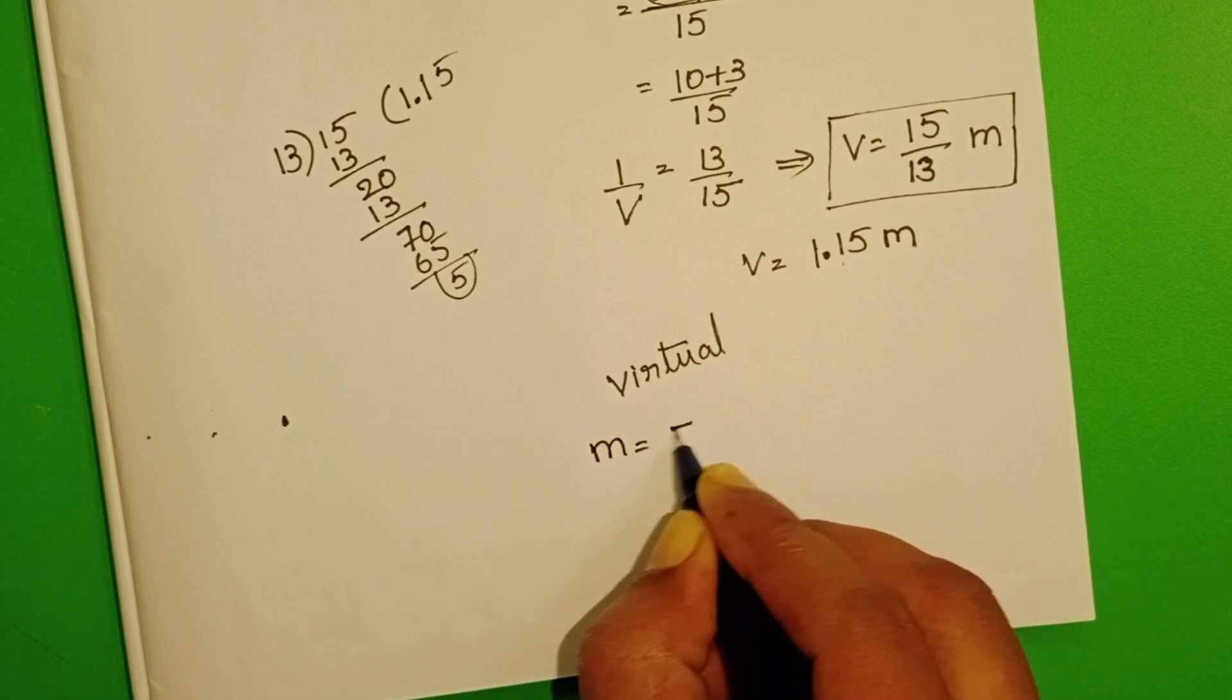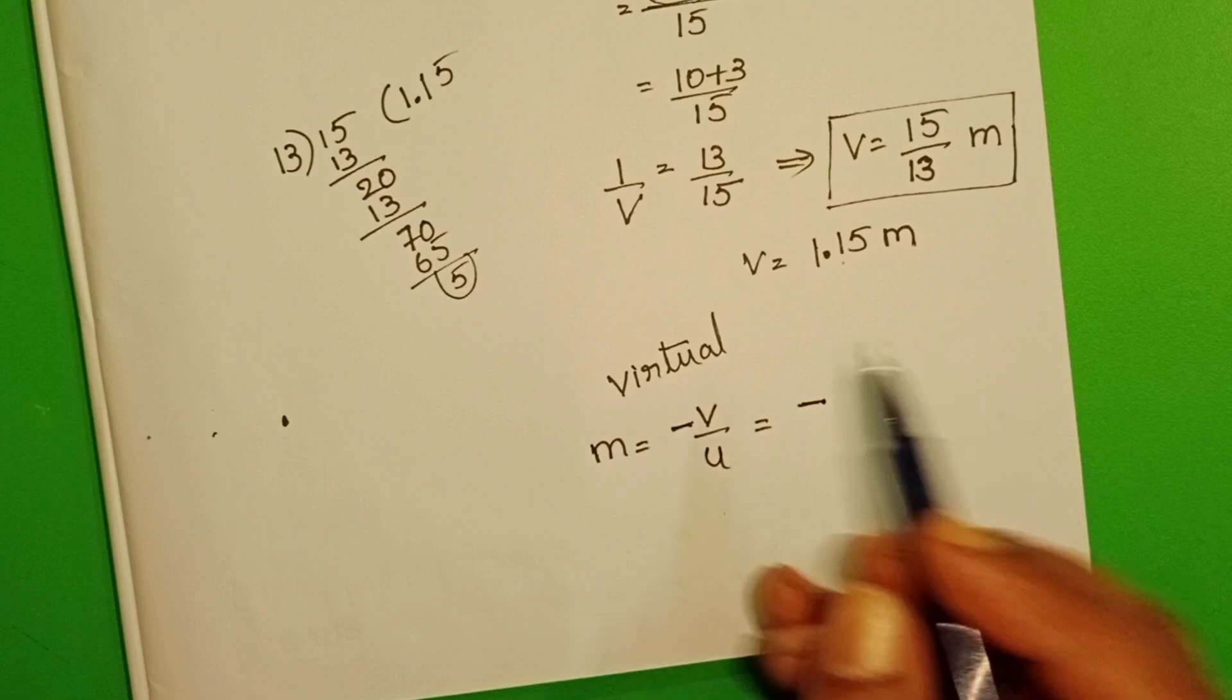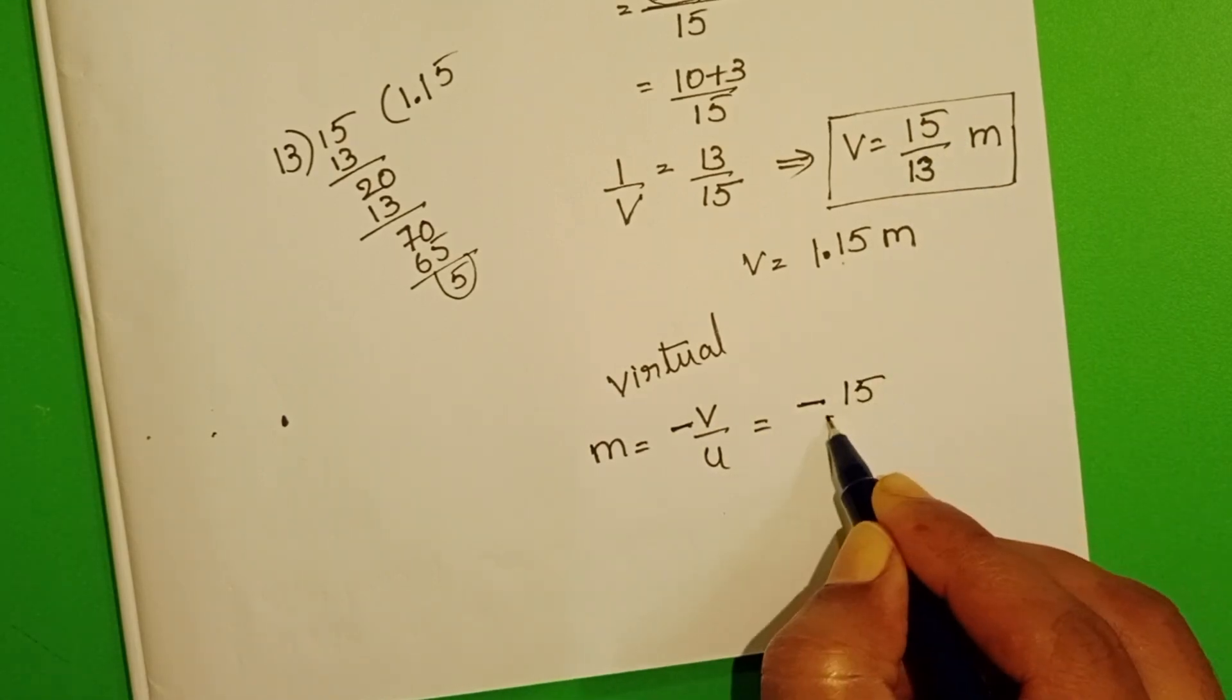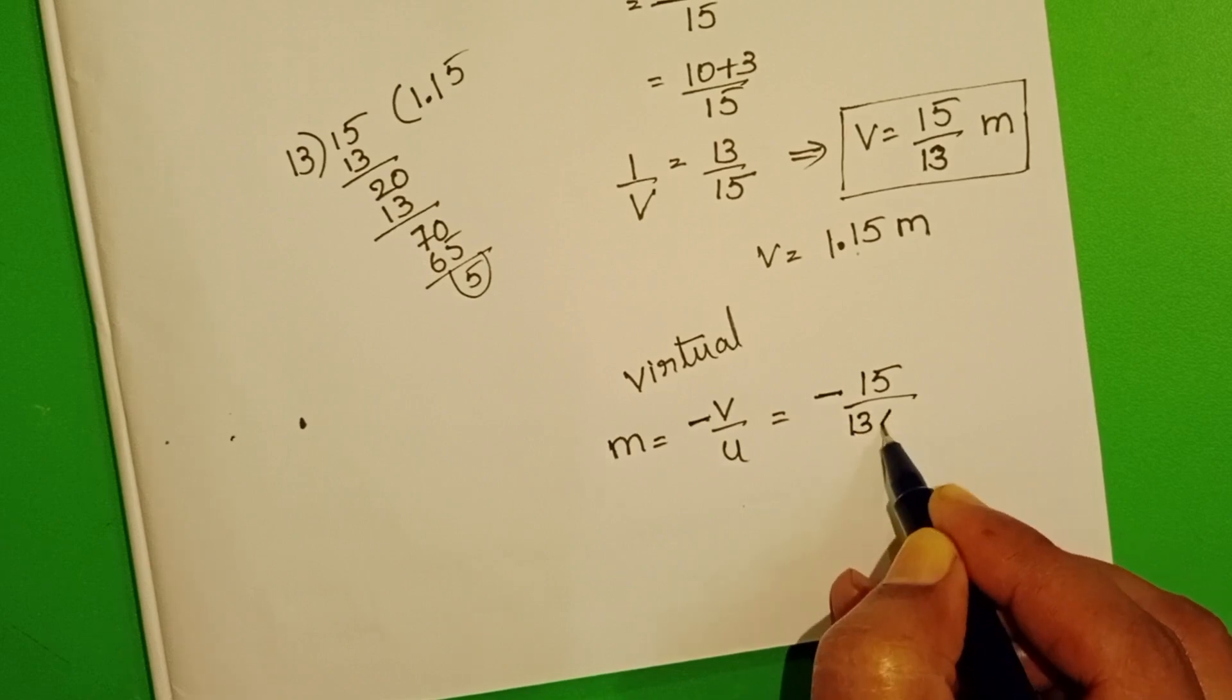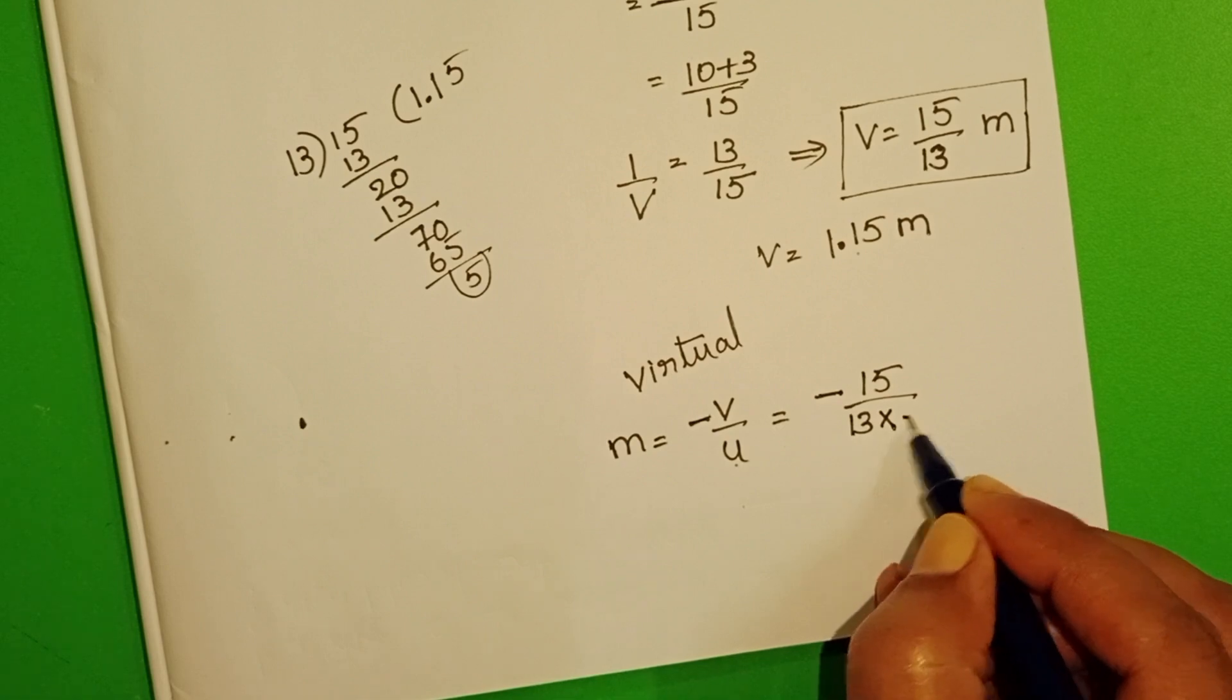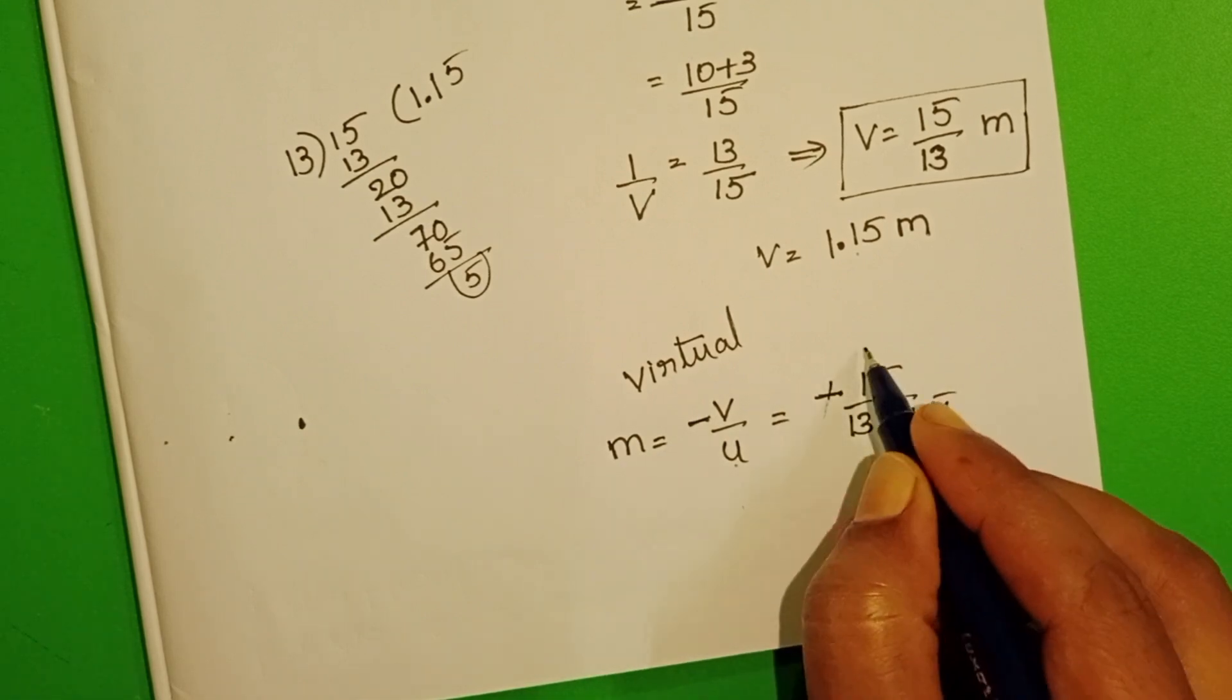M equals minus V by U. In place of V, take 15 by 13 for easier simplification. 15 by 13 times object distance. The negative signs cancel. 5 goes into 15 three times.